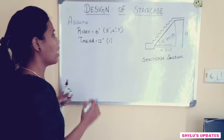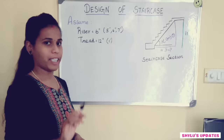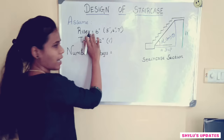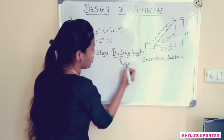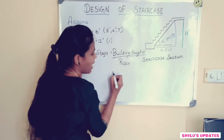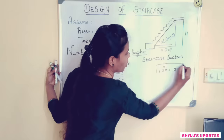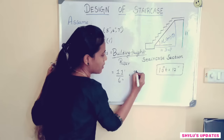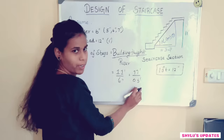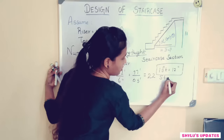Now we know the building height and also the riser, so from that we can calculate the number of steps. The formula is: number of steps equals building height divided by riser. Building height is 11 feet and riser is 6 inches. Since 1 foot equals 12 inches, we convert 6 inches to 0.5 feet. So 11 divided by 0.5 gives us 22. Therefore, the number of steps is 22, which is also equal to the number of risers.